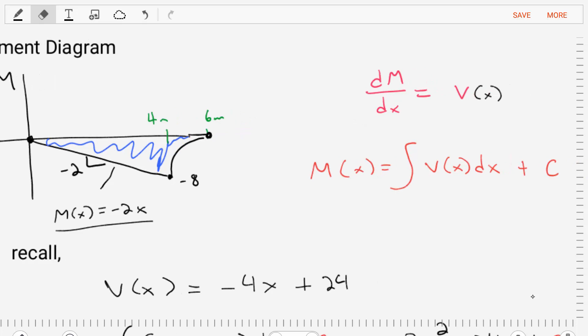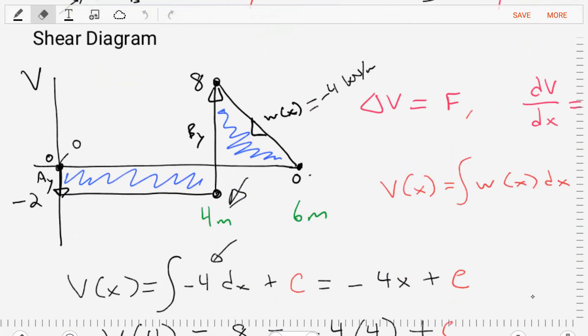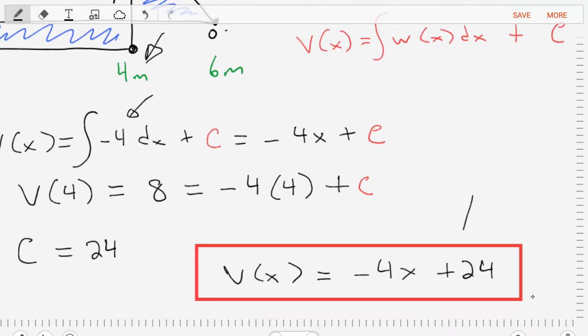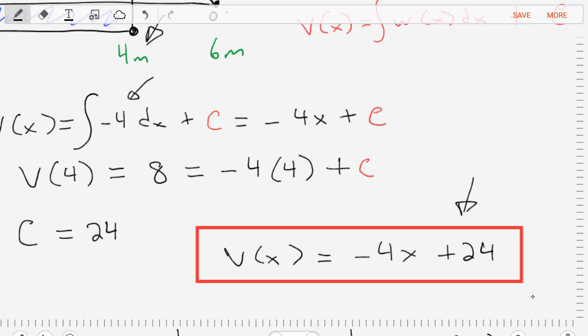Now that we've done that portion, let's look at what happens at four meters in our shear force diagram. At four meters, our diagram changes and we encounter this shear force that's degrading. It starts at eight and it decreases all the way to zero. And we actually found an equation for the shear force.